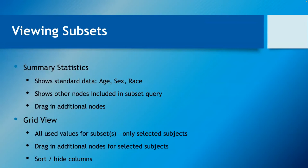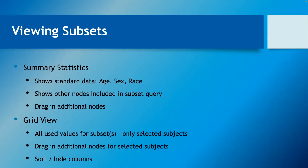Once you've done that you can run summary statistics — this is like the dashboard overview you get in i2b2. You can see standard data stored in the patient table: age, sex, race — highlighted automatically as pie charts and bar charts. Any other nodes you've included in the query will also show up in the summary statistics, and you can drag any other nodes across to get a breakdown between the two subsets for any other properties.